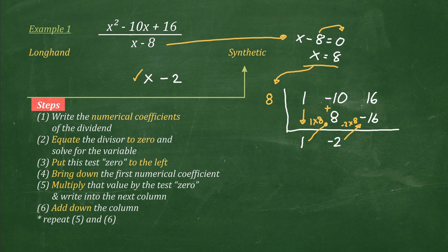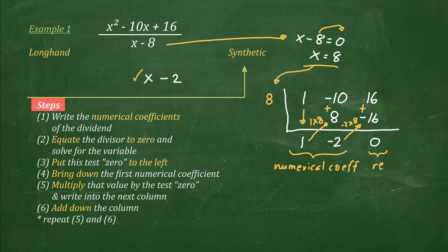Finally, step 6: add down the column. So in this case, we have 16 plus negative 16, which is 0. So what do these numbers mean? The numbers here are the numerical coefficients of the quotient, while the last number is the remainder. It's very important to note that the literal coefficient of this first number — that's 1 — is always 1 less than the degree of the dividend. The reason is that when you divide variables, we subtract the exponents. Meaning, when this is x squared and this is x to the first power, the literal coefficient here should be x to the 2 minus 1, therefore just x. Since this should have a decreasing order of degree, negative 2 will have no variable — it will be our constant. The remainder is 0, so here's our final answer.